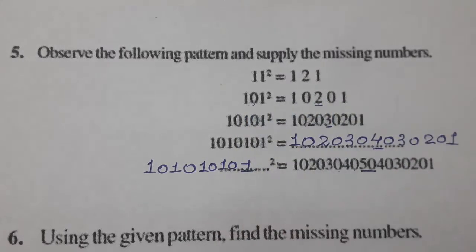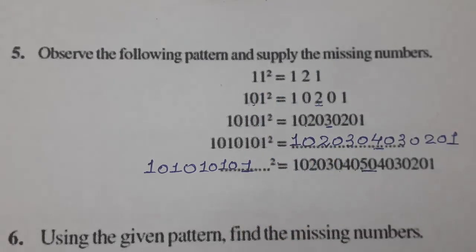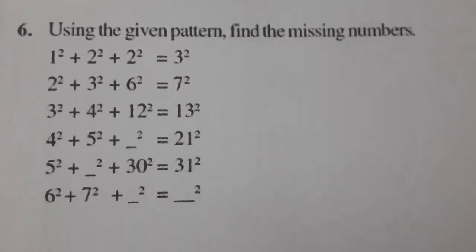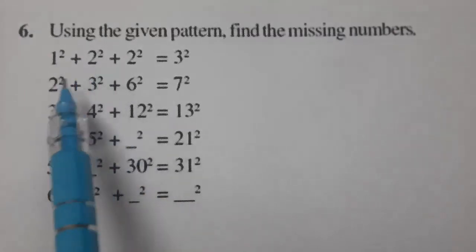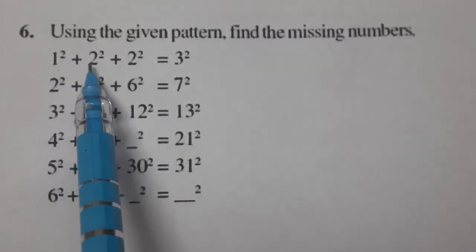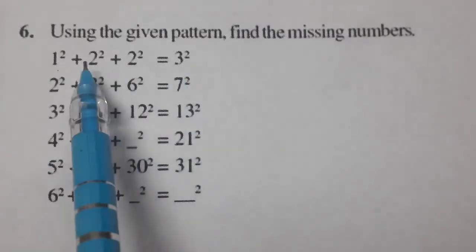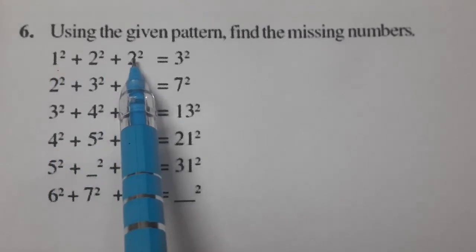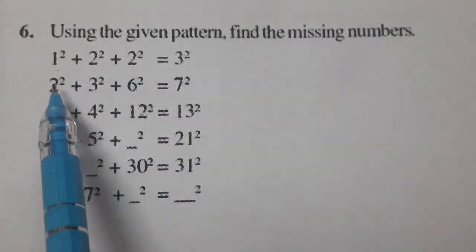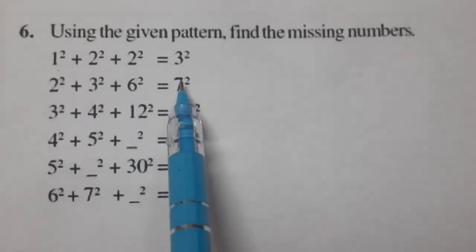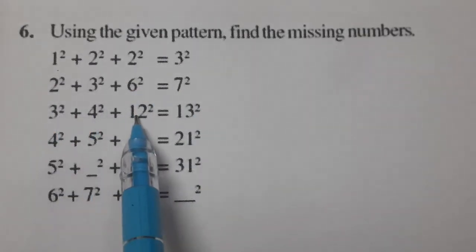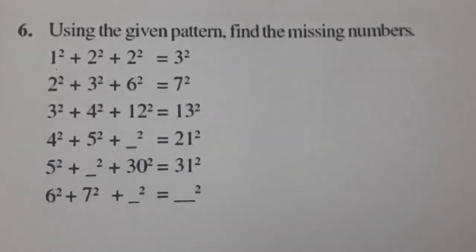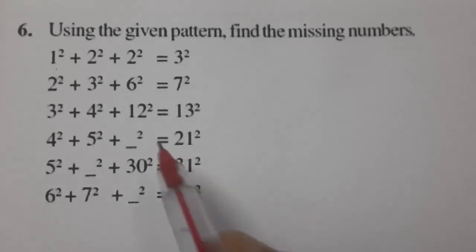Now the sixth part C: using the given pattern, find the missing numbers. See: 1 squared plus 2 squared plus 2 squared equals 3 squared. Following the pattern: 1, 2 → 2; 1, 2 → 2, and 2 plus 1 is 3. Then 2, 3 → 6; 6 plus 1 is 7. Then 3, 4 → 12; 12 plus 1 is 13. Then 4, 5 → 20.